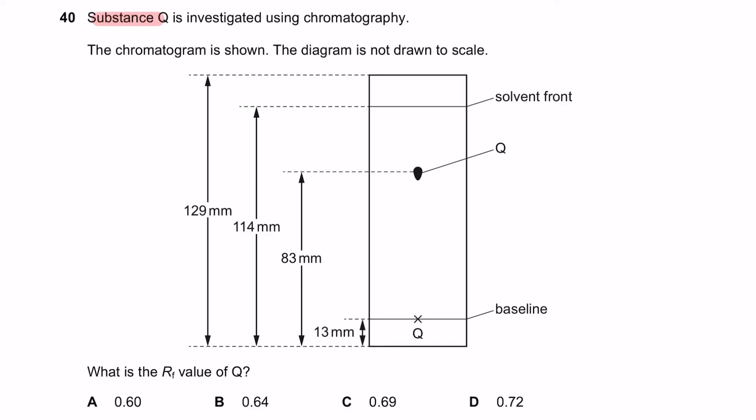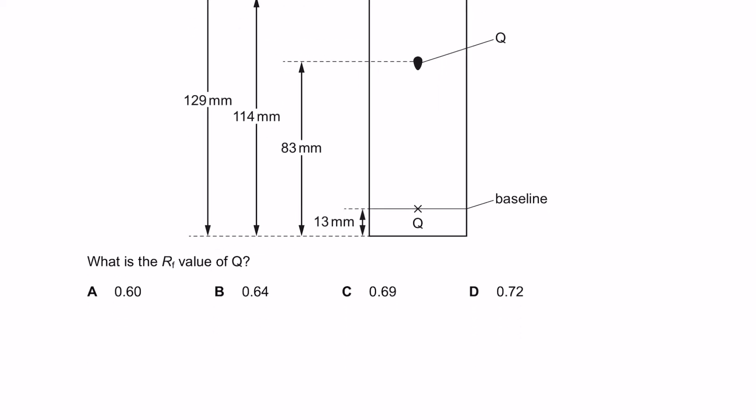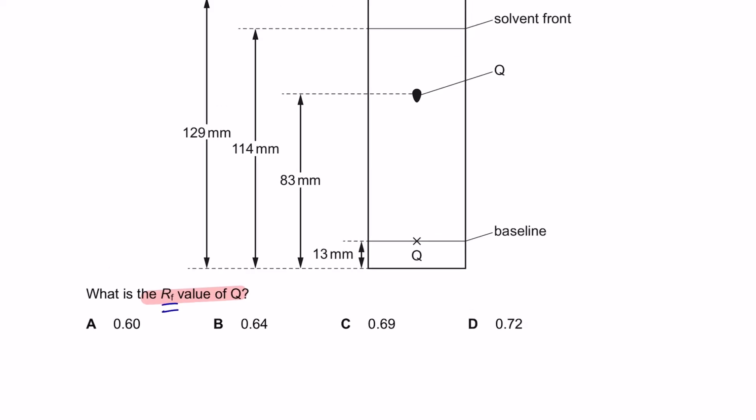Question 40. Substance Q is investigated using chromatography. The chromatogram is shown. The diagram is not drawn to scale. What is the Rf value of Q? So Rf here is the retention factor value that we are looking for. To do this, we can use the formula. Distance traveled by substance over the distance traveled by solvent.